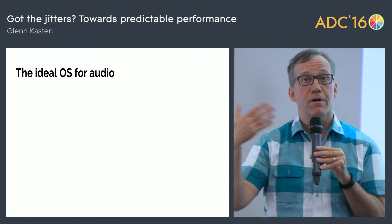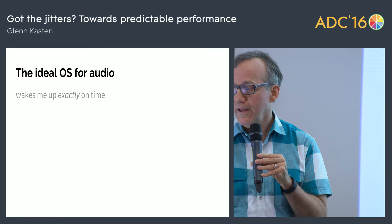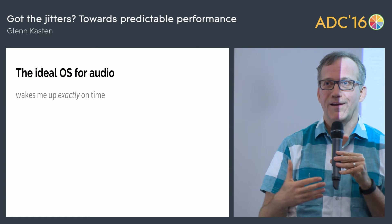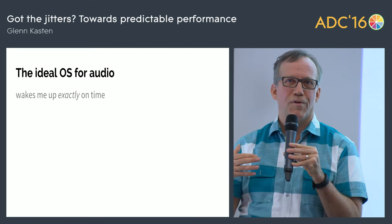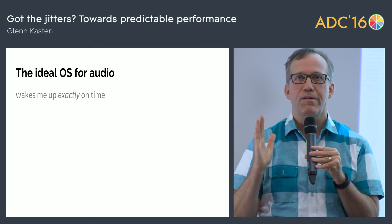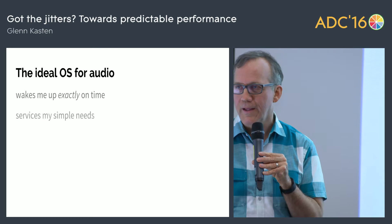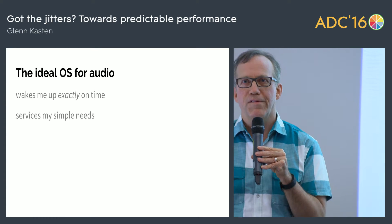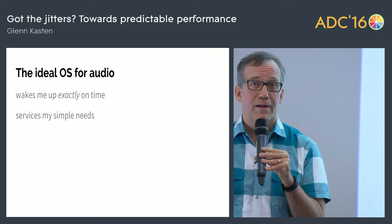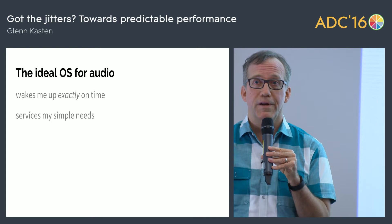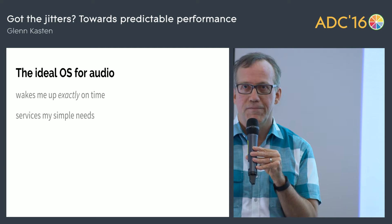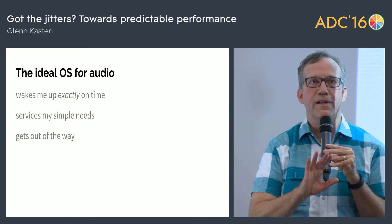The operating system that would support that ideal CPU would, first of all, wake me up exactly on time. In the case of Bella, it woke us up every two samples. Personally I don't need it quite that often, but even every two or three milliseconds would be great, as long as it's exactly on time — I don't want it to ever be late. It would provide just the few simple services I need: for core real-time audio, basically just memory allocation and some sort of inter-process communication or IPC to the rest of the system. Beyond that, it completely gets out of the way.